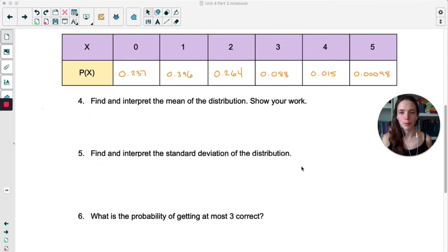Okay, so here are probabilities. You can see that it's most likely that you will not do too well on this quiz. For 4 and 5, we're supposed to find and interpret the mean and the standard deviation. You can do this by hand or you can do it using 1var stats. Pause the video and do that now.